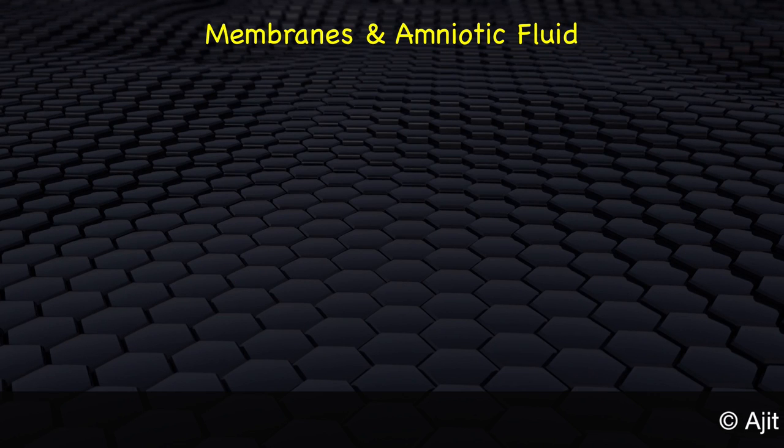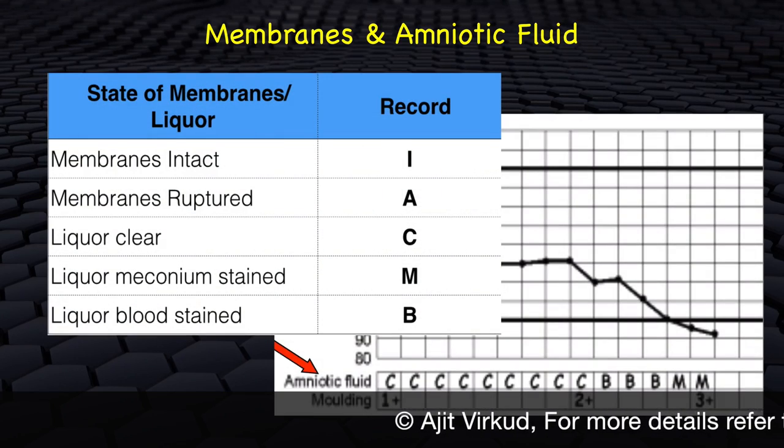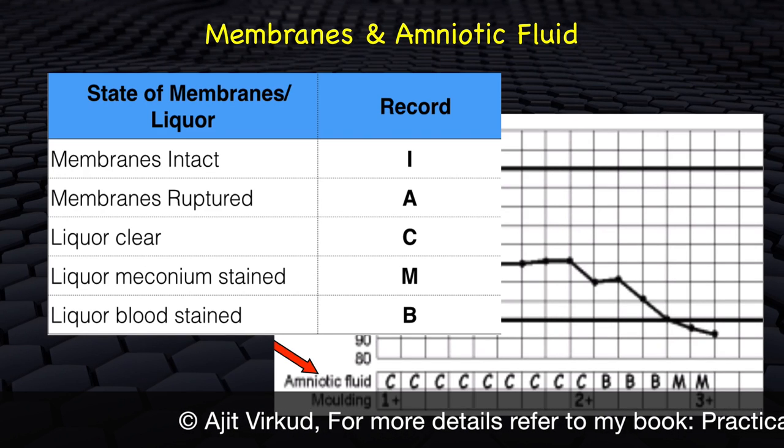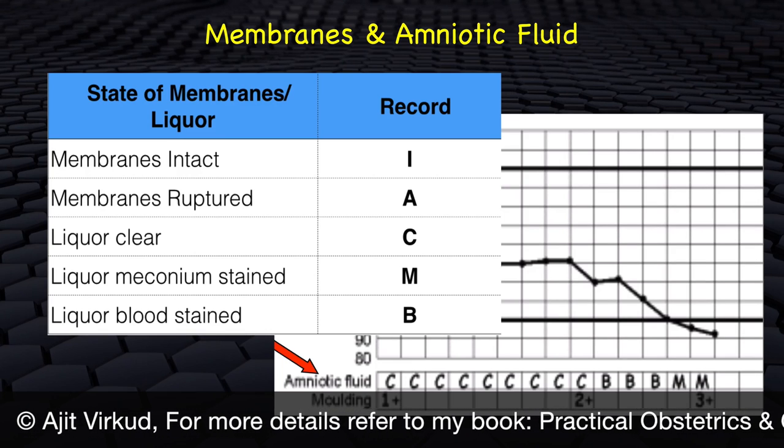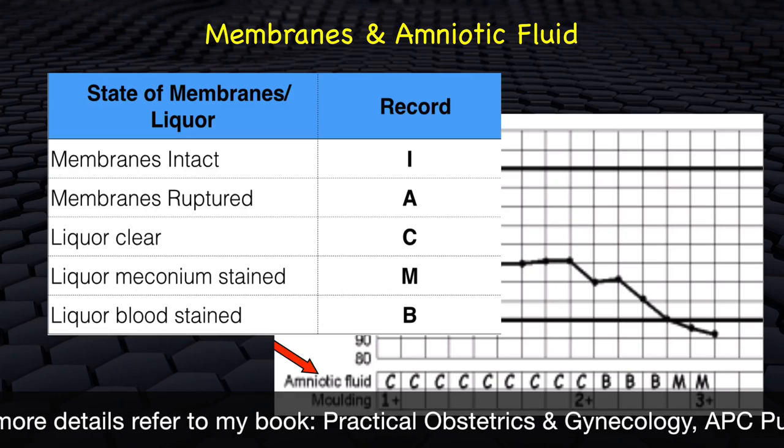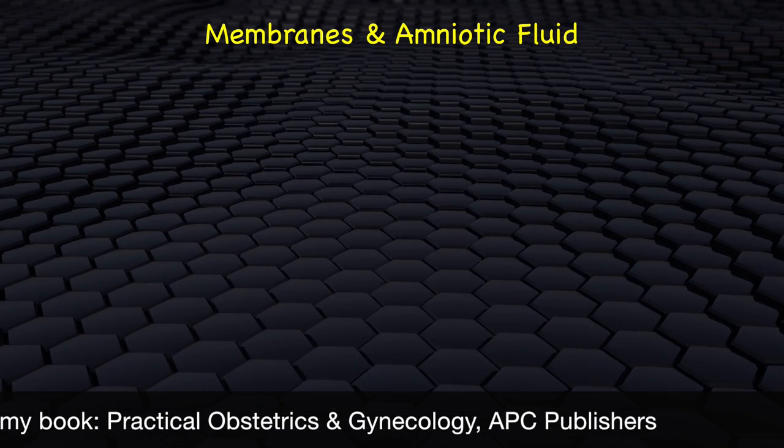Presence or absence of membranes and color of amniotic fluid is recorded at each vaginal examination. Membranes are recorded as I if membranes are intact and A if membranes are absent. It is recorded as C if the amniotic fluid is clear, M if it is meconium stained and B if it is blood stained.